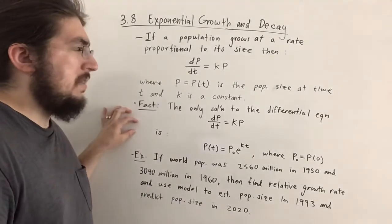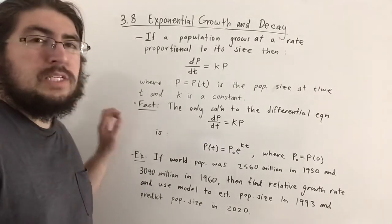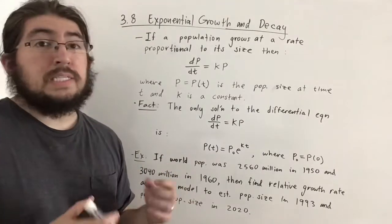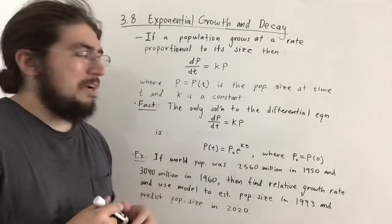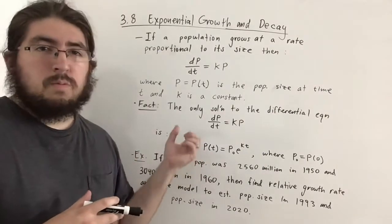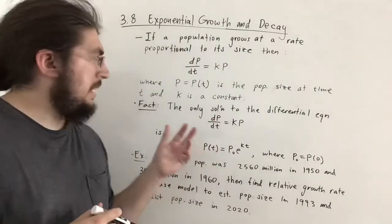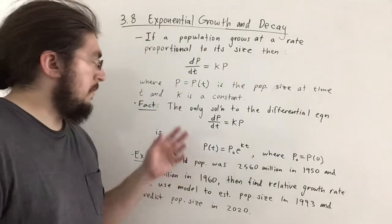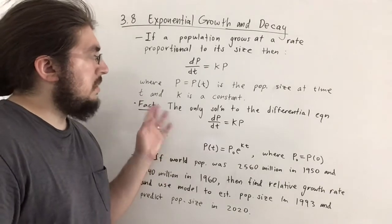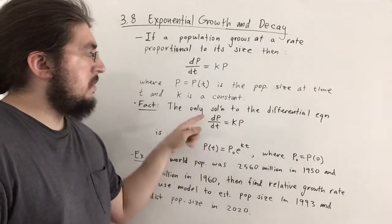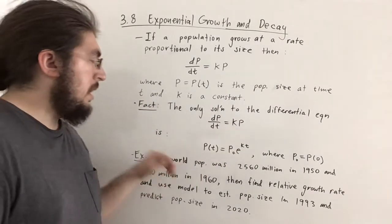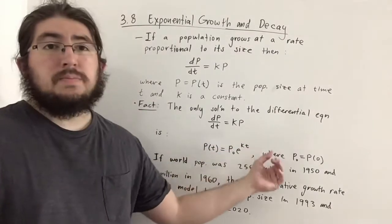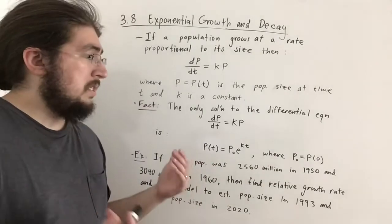Here's a fact I can't fully prove right now, because we don't have methods or techniques of solving differential equations yet — more of that in Calculus 2. But we can kind of check it. The only solution to the differential equation dP/dt = kP is P(t) = P₀e^(kt), where P₀ is P(0), the population size at time 0.